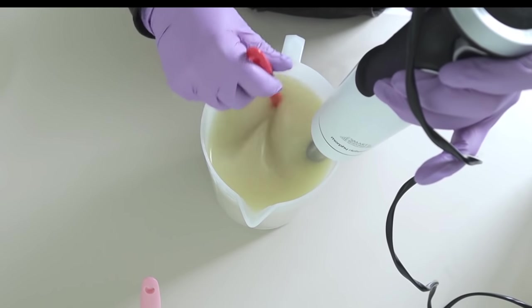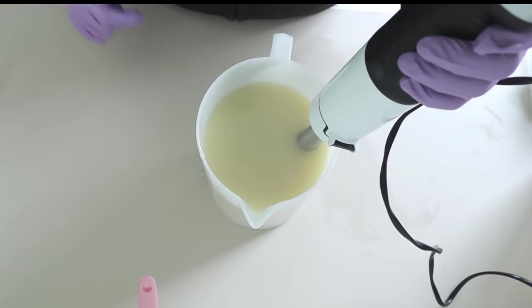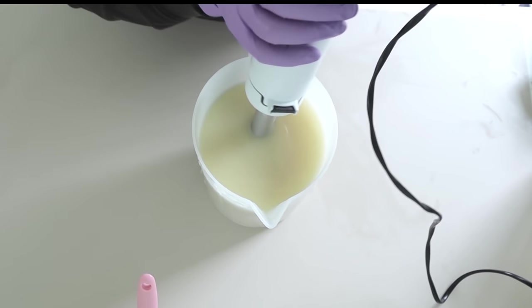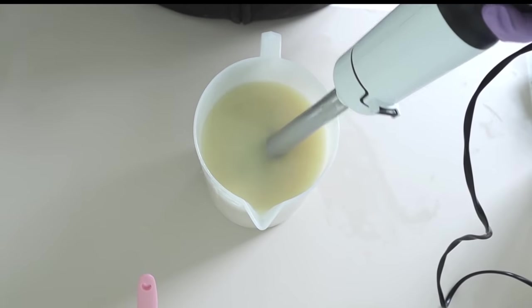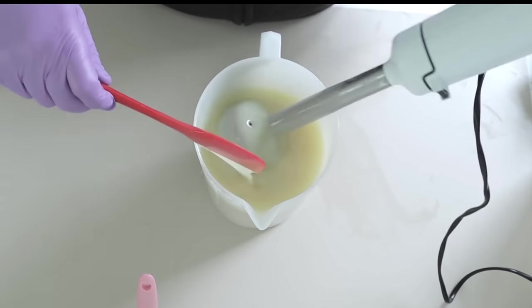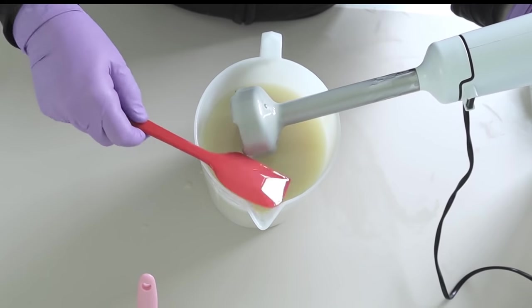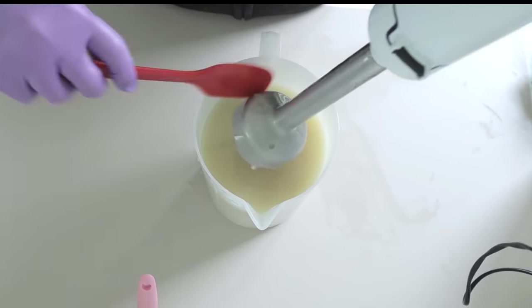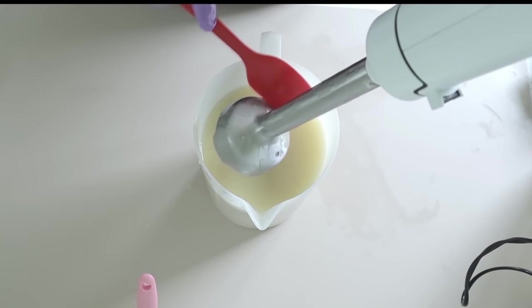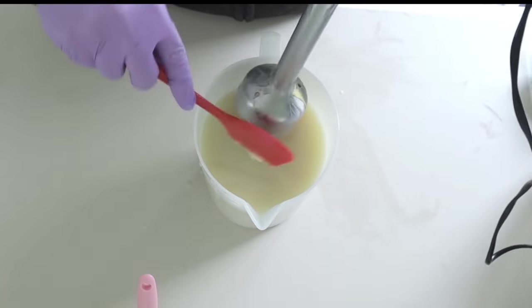Now for the peacock swirl you do want to keep a nice fluid batter, not really really thin, you do want to have a trace, but you do need to make sure that it's going to stay fluid throughout the whole pour. So here I'm just literally bringing my batter up to emulsion and then I'm going to stop and mix it into those colors.